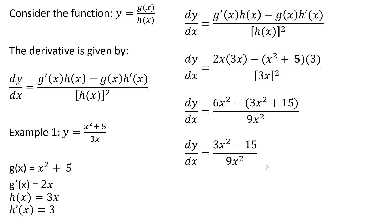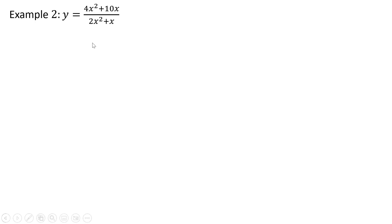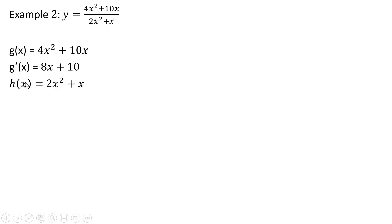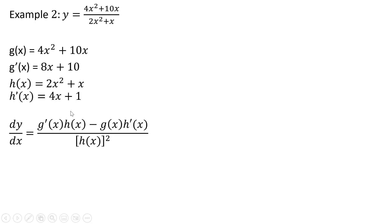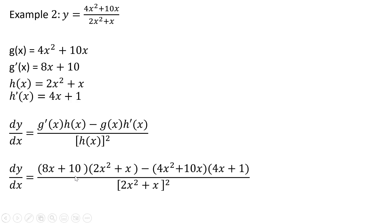Let's do another example — Example 2. The numerator here is the g of x function, and the derivative of that is going to be 8x plus 10. The denominator gives us the h of x function, and taking the derivative of that we get 4x plus 1. Writing our rule and then making the appropriate substitutions, we get this result. We could simplify this a little bit, but in the interest of time I won't do that.